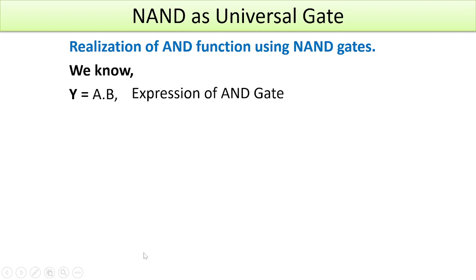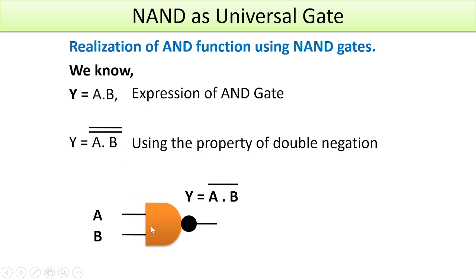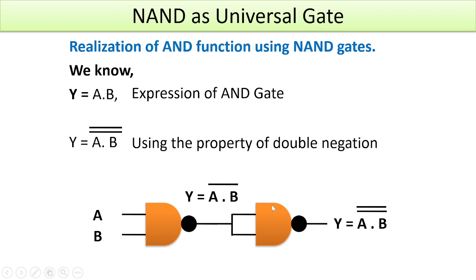Now let us realize the AND function using NAND. The NAND gate is AND followed by NOT, so we need to remove the inversion to get AND. We use double negation: the expression A-and-B double-barred means a NAND gate whose output is again complemented. So with inputs A and B into a NAND gate giving A-and-B whole bar, complementing that output with another NAND gate gives us the AND function.